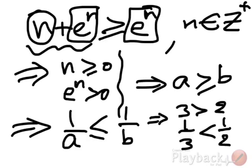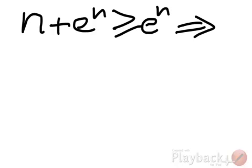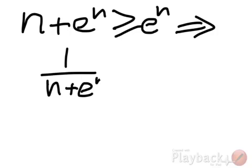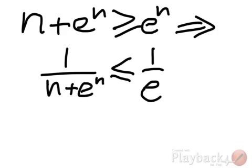Let's go to the next item. So, now that we establish, then, that n plus e^n is greater than or equal to e^n, that would have to imply that 1 over (n + e^n) is less than or equal to 1 over e^n. But wait a second here.